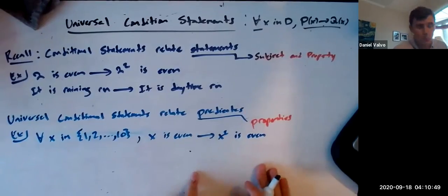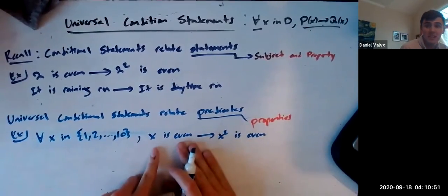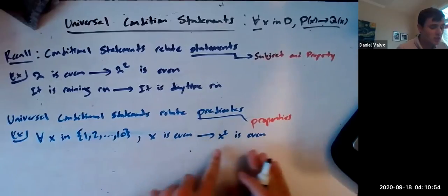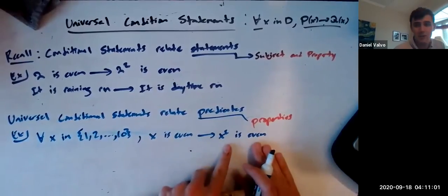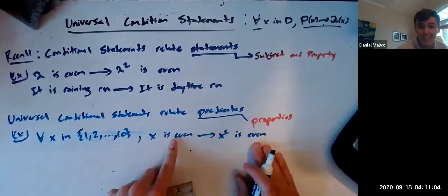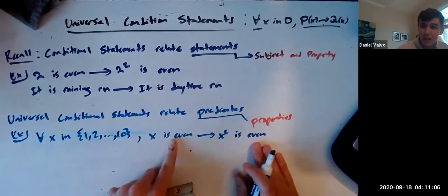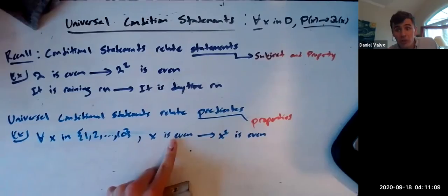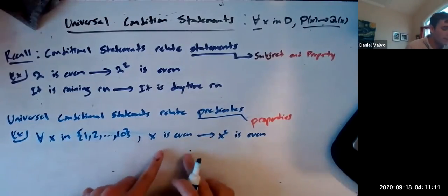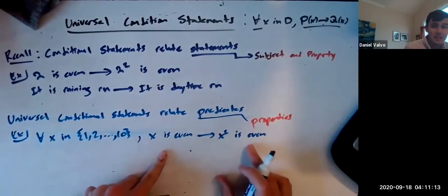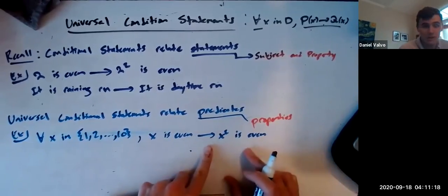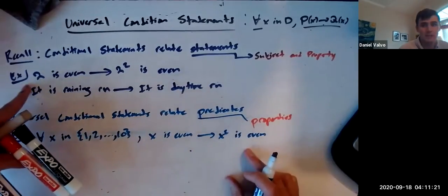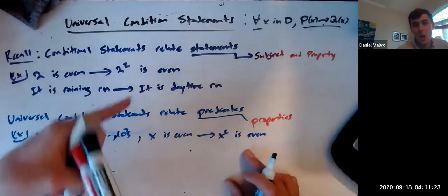So basically, what this is saying is that the property of a number being even is enough to deduce that that number also has the property that its square is even. It's saying that this property of X squared being even follows from this property. And so, relating properties, not specific statements. And that's much more valuable. Now we're saying from the property of being even we can deduce the property of its square being even. That's much more powerful than just saying this particular number is even and then its square is even.